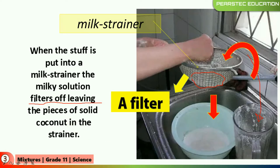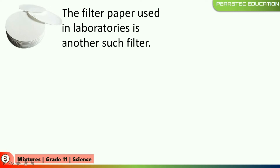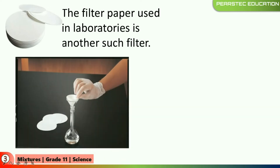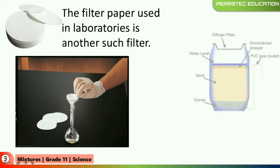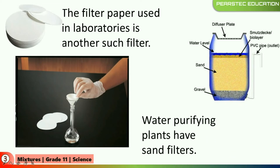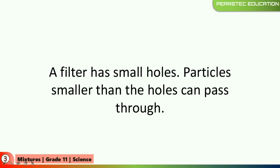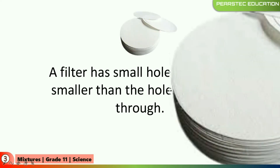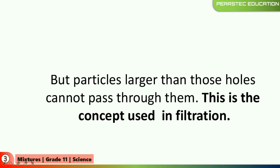So that is the filter they are talking about. For this activity, they need a filter. The filter paper used in laboratories is another such filter. They use these kinds of papers to filter in the laboratories. Water purifying plants have sand filters. These are some of the examples. A filter has small holes — particles smaller than the holes can pass through. That sand filter definitely has small holes. Even when you zoom in you can't see them, but filtering is happening. Particles larger than those holes cannot pass through. This is the concept used in filtration.